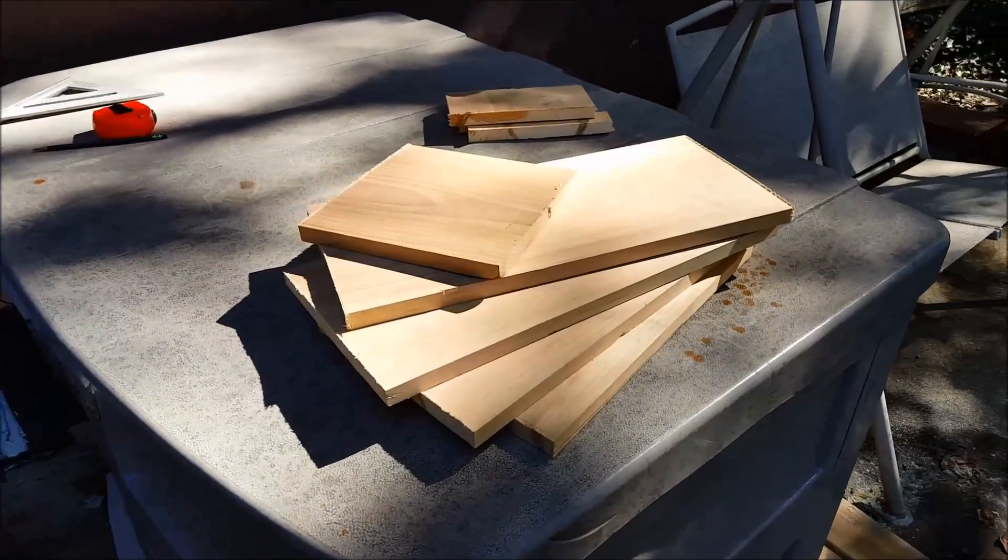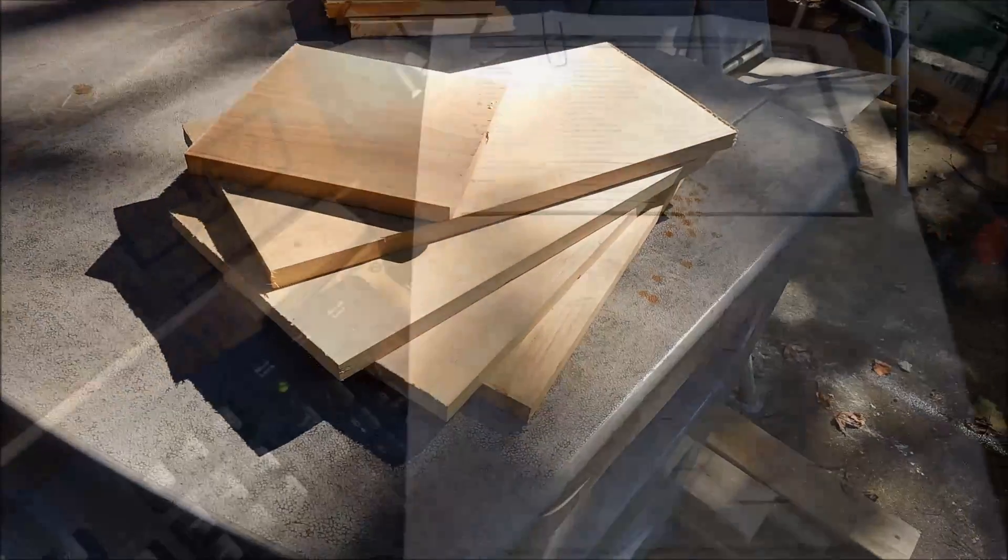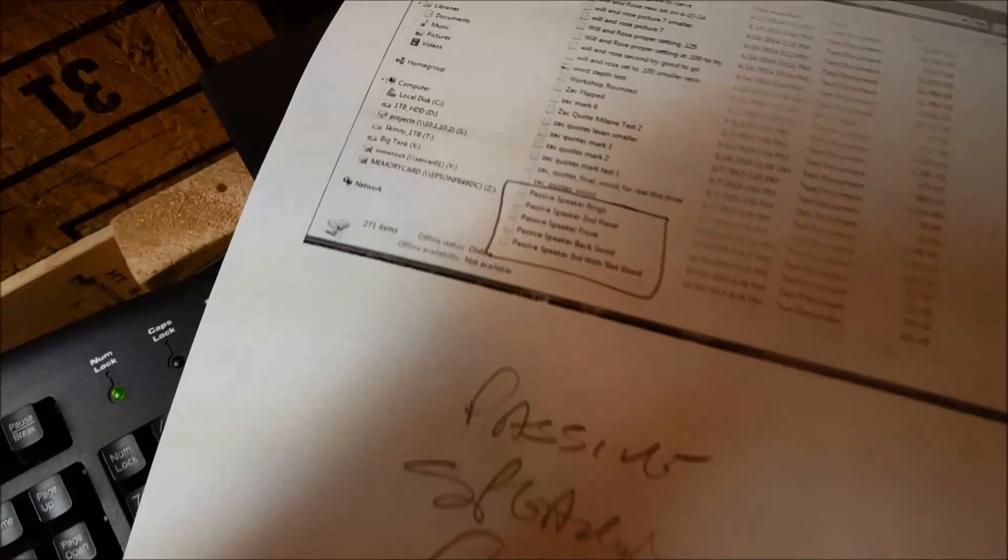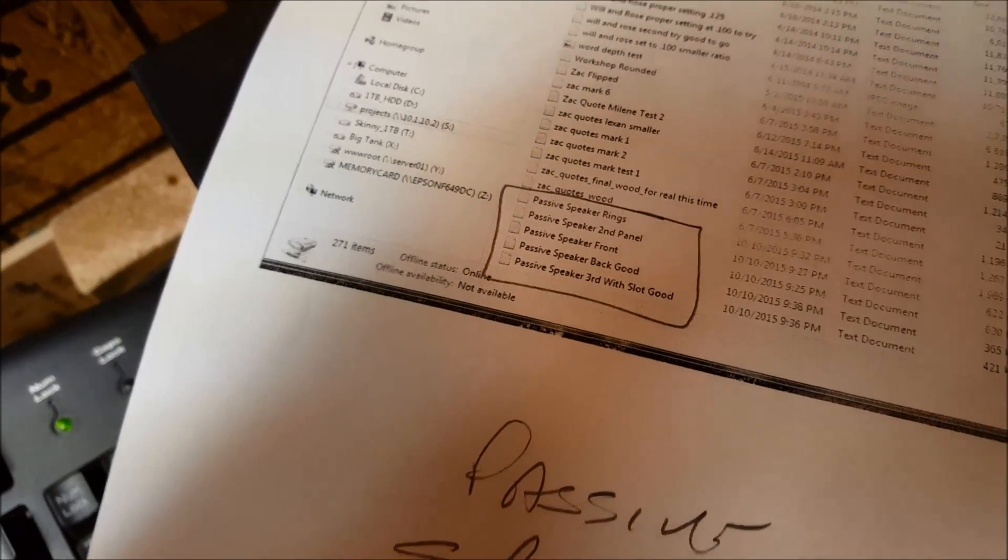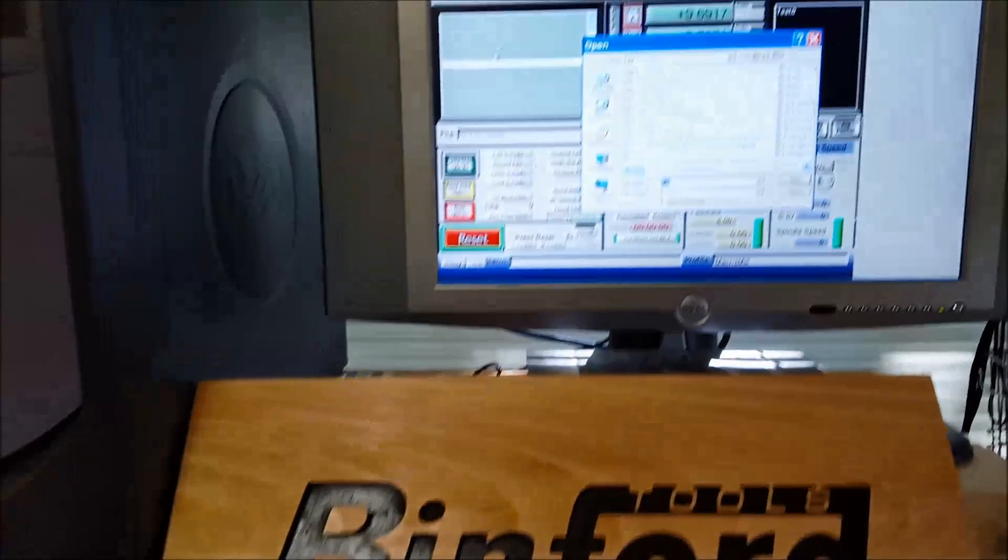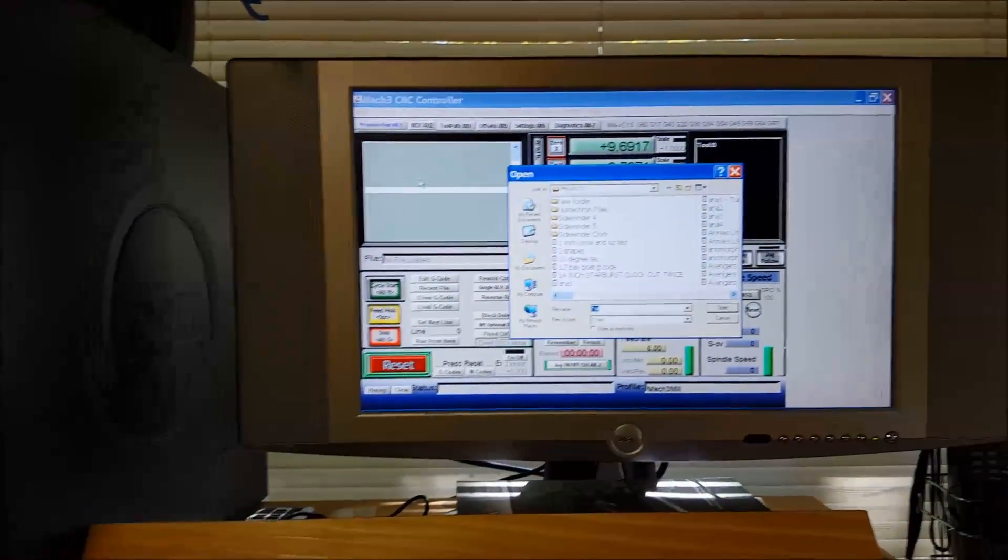The piece is ready to set up on the machine. When I have a project ready to cut, I usually print out a sheet that's got my individual files. So I can keep some order to the whole thing. So we'll open those up on the dedicated CNC machine and start cutting these out.